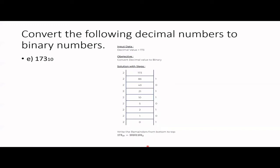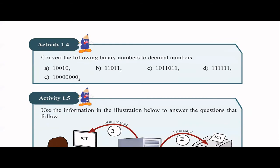Next: 173. Same method — continuously divide by 2 until the quotient is 0. The answer is 1, 0, 1, 0, 1, 1, 0, 1, base 2. Never forget the base.